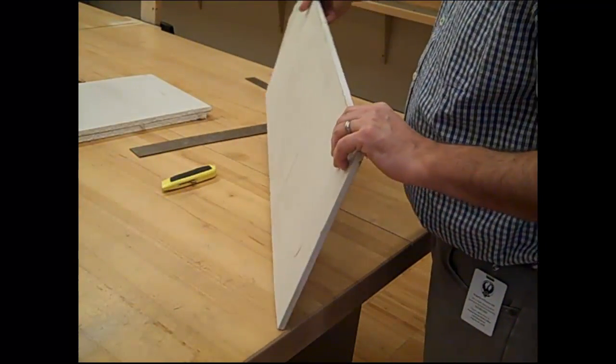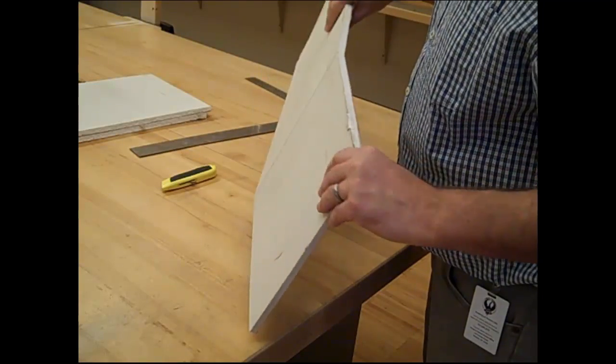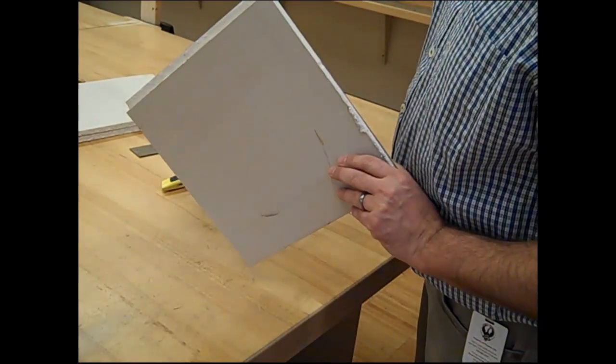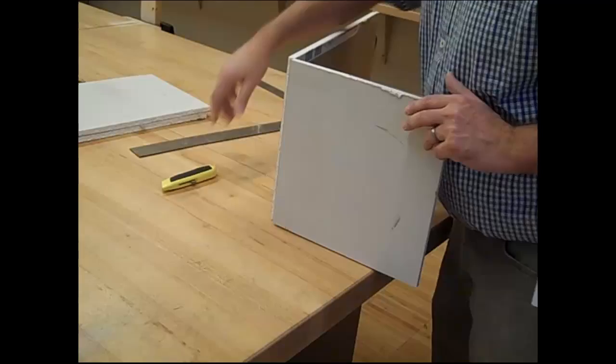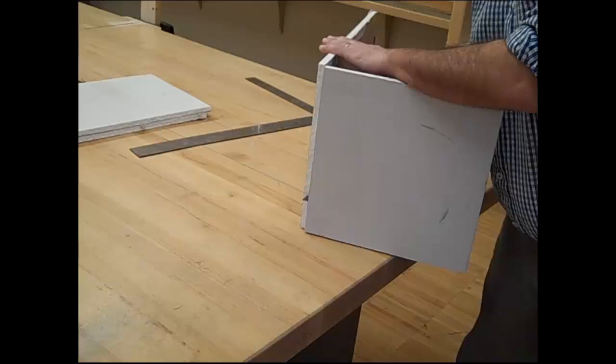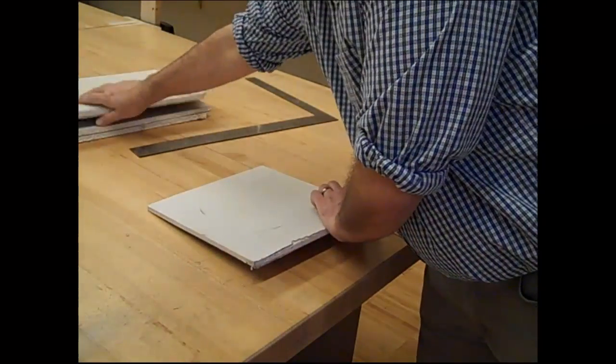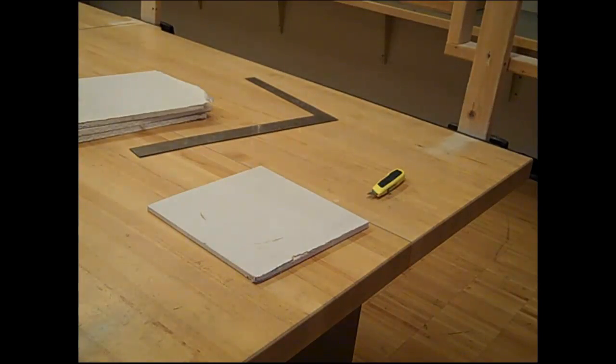Flip the piece of sheetrock. You can see I've cut this line. Turn it sideways and just give it a little punch to the back, just a tap. You'll see it breaks very nicely. Next, take that razor blade and cut the paper on the back side. Now I have my one block.